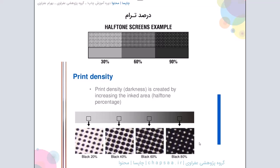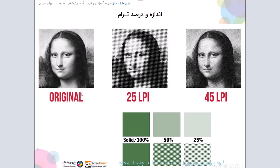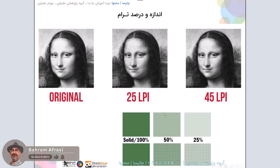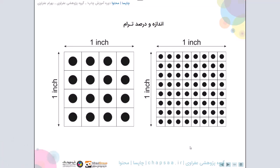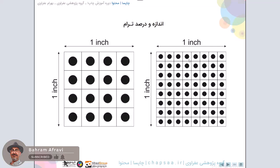این تفاوتی که میخواستم بدونید و در جریانش باشید. روی تصویر بعدی بهتر میتونم بهتون نشون بدم. اینجا همون تصویری که توی اندازه ترام دیدید رو مقایسه میخواهیم بکنیم با وضعیت درصدها. در این تصویر که شاید خیلی واضح تر باشه - همون تصویر ویدیوی قبلی هست - شما ببینید در این قسمت ما هم LPI رو داریم و هم درصد ترام یا اندازه ترام رو داریم.